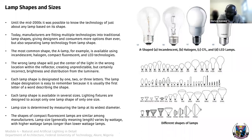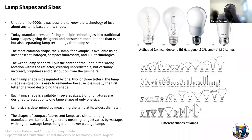Today manufacturers are fitting multiple technologies into traditional lamp shapes, giving designers and customers more options — but also separating lamp technology from lamp shape. The most common shape, the A-shape lamp, is available in incandescent, halogen, compact fluorescent and LED technologies. So if you see an A-shape lamp and think it's incandescent, you might be wrong — it could have an LED inside. That's why you have to understand the different shapes and sizes of all these lamps.